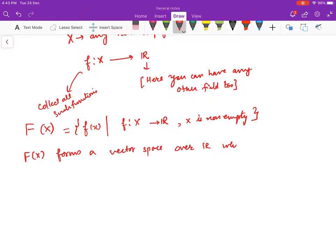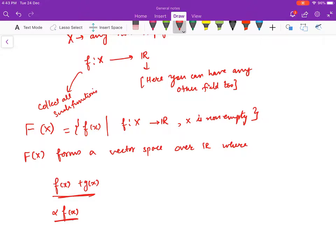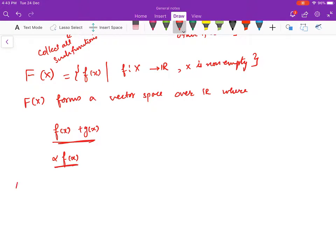Addition is defined as normal addition of functions, and alpha times f(x) is defined as usual with functions. The additive identity is the zero function.